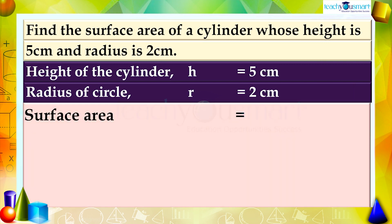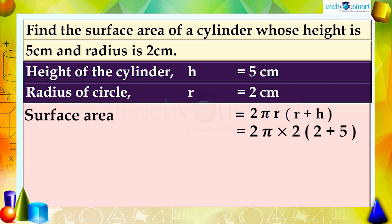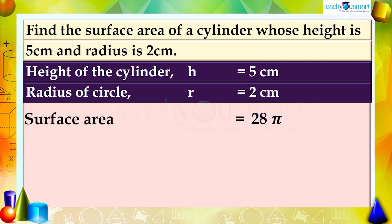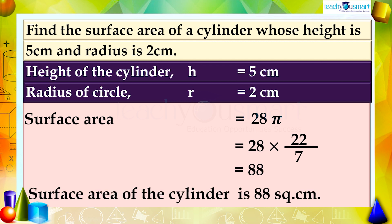The surface area equals 2πr(r + h) equals 2π multiplied by 2 multiplied by (2 + 5), equals 4π multiplied by 7, equals 28π. Substituting the value of π as 22/7, we get 28 multiplied by 22/7 equals 88. That is, the surface area of the cylinder is 88 square centimeters.